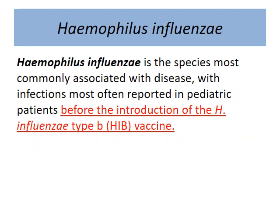Haemophilus B is the most important type, and there was a time we had a lot of problems especially in pediatric patients. Ever since the HiB vaccine became available — Haemophilus influenzae type B vaccine — it is a very important part of childhood vaccination.